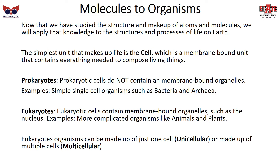The simplest unit that makes up life is the cell, which is a membrane-bound unit that contains everything needed to compose living things. Generally, there are two types of cells and two types of living organisms: prokaryotes and eukaryotes.